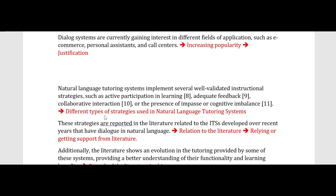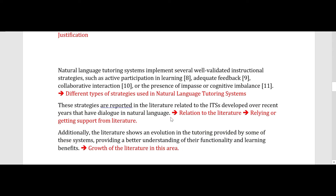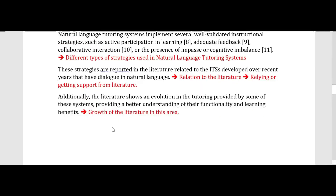The next paragraph talks about different types of strategies used in natural language tutoring systems, relating them to the literature and getting support from it. Different strategies used in ITS systems are reported in literature related to ITS developed over recent years. The next sentence states that there is a growth of literature in this area, which is important because it slowly ties into the main objective of the introduction: showcasing the need for doing a systematic review in this area.